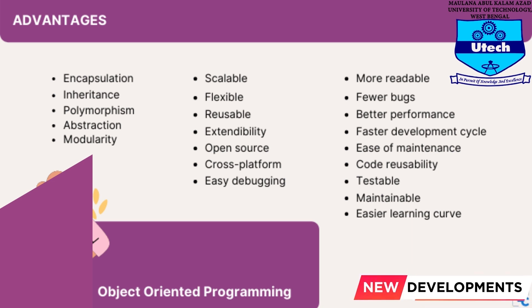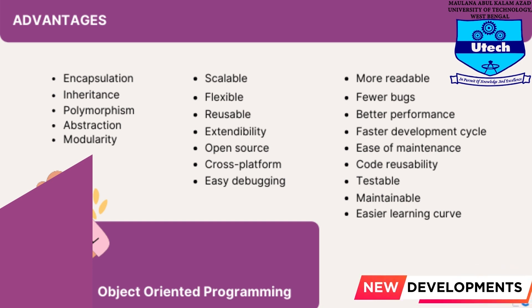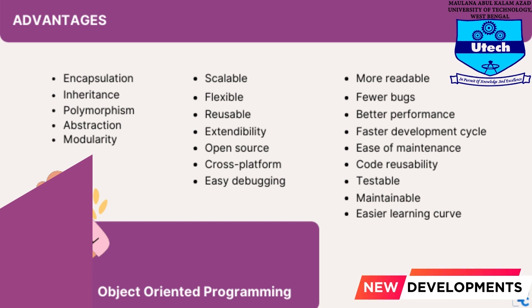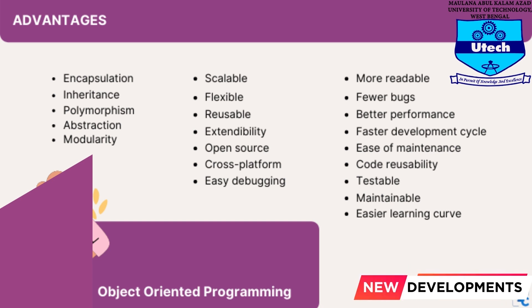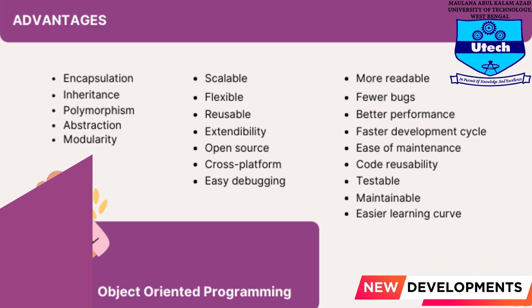Productivity — programmers can construct new programs quicker through the use of multiple libraries and reusable code. Easily upgradable and scalable — programmers can implement system functionalities independently. Interface descriptions — descriptions of external systems are simple due to message passing techniques used for object communication. Security — using encapsulation and abstraction, complex code is hidden, software maintenance is easier, and internet protocols are protected. Flexibility — polymorphism enables a single function to adapt to the class it is placed in; different objects can also pass through the same interface.